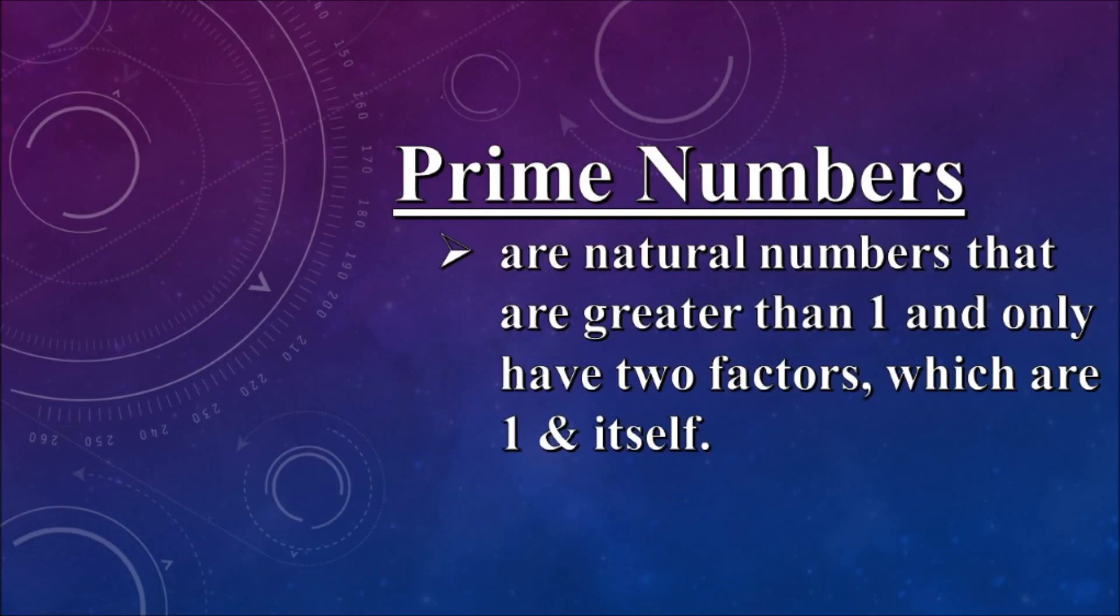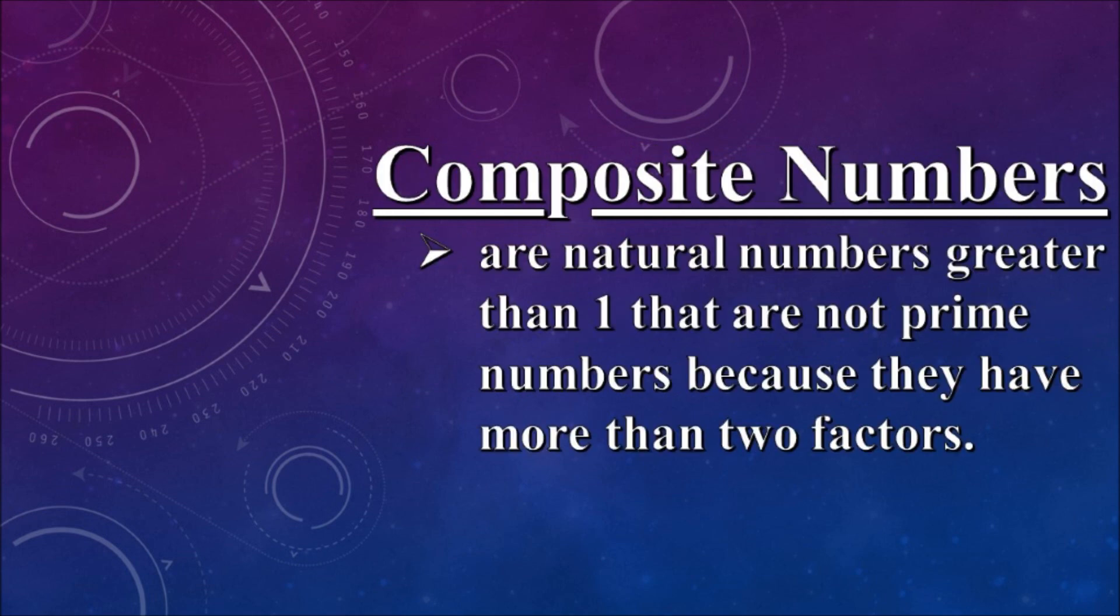Prime numbers are natural numbers that are greater than 1 and only have two factors which are 1 and itself. Composite numbers are natural numbers greater than 1 that are not prime because they have more than 2 factors.